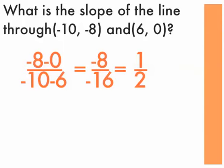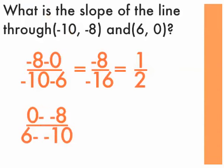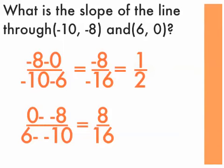The second way: 0 minus negative 8 over 6 minus negative 10. Both have double negatives, so we get 0 plus 8 which is 8, and 6 plus 10 which is 16, giving 8 over 16. Again, 8 goes into both, simplifying to 1/2. It didn't matter which ordered pair came first, as long as corresponding x and y values were in the same position on top and on bottom.